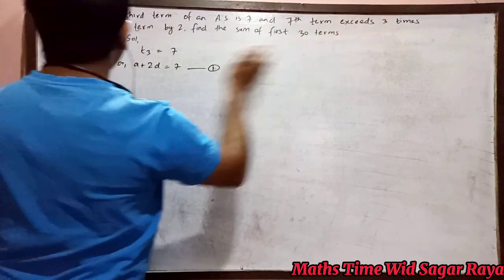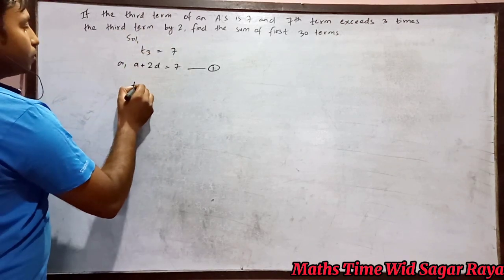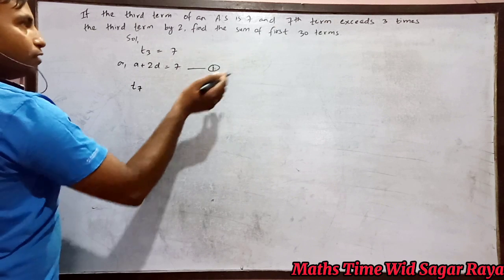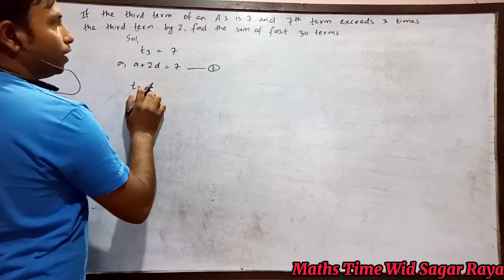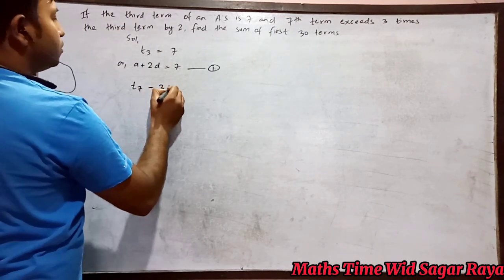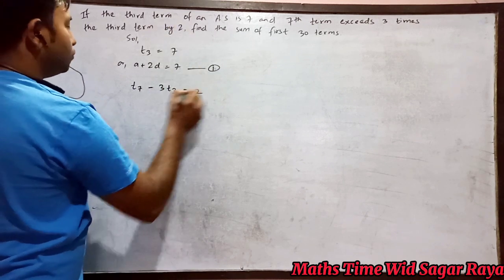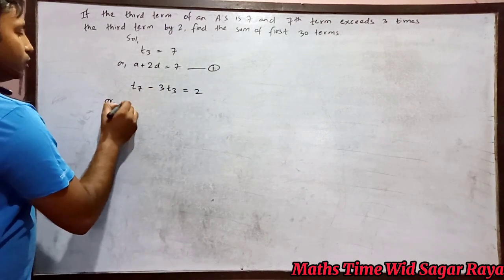Now, seventh term exceeds three times the third term by 2 means the seventh term, t7, exceeds, meaning the difference. So seventh term minus three times the third term, 3 times t3, and the difference equals 2.